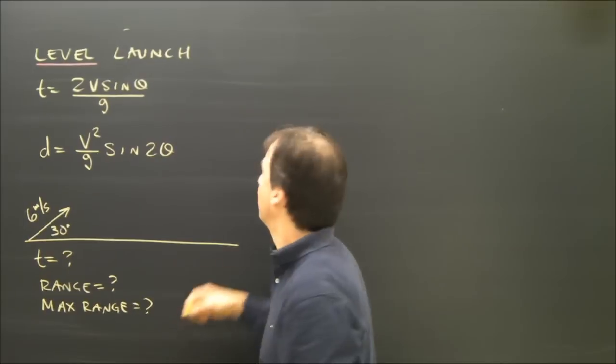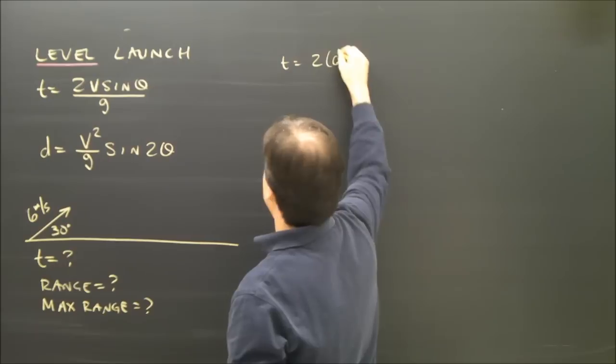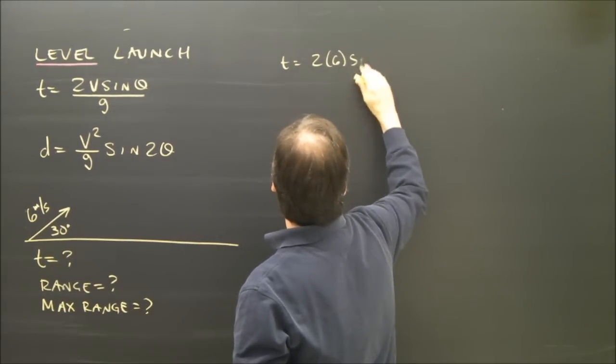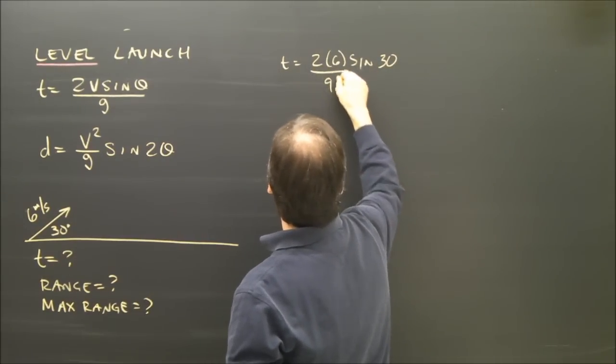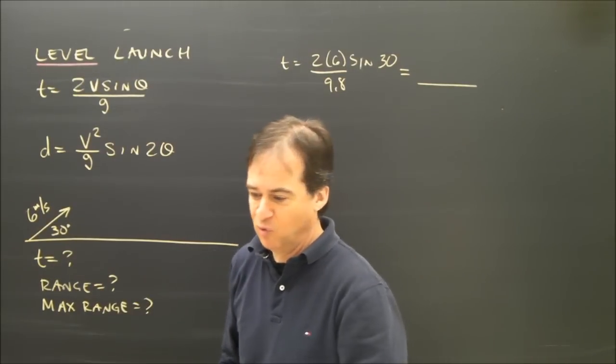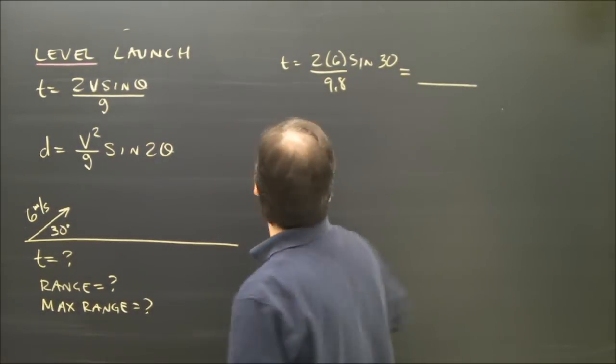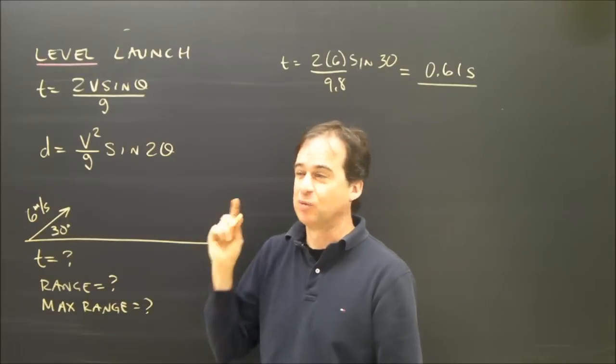So for this example, the time would be 2 times 6 sine of 30 degrees divided by 9.8. And that'll give you an answer. I believe the time was 0.61, I've rounded it a bit. So 0.61 seconds.